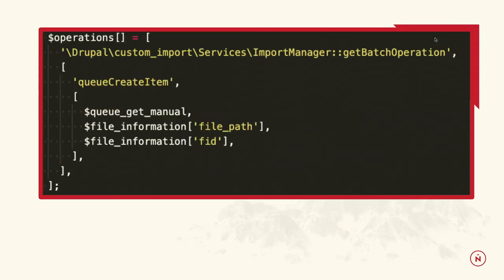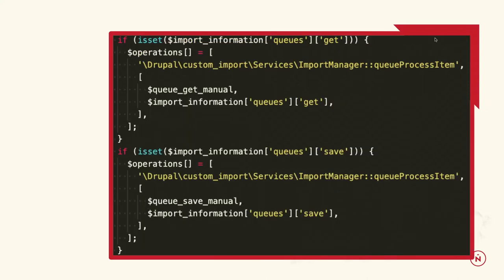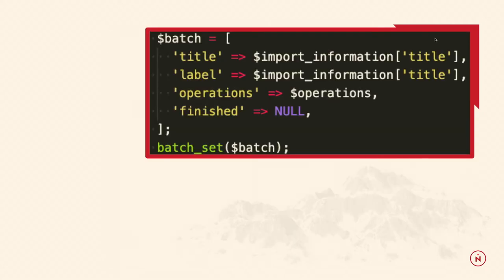Then we have our initial operation that creates that initial item — really just getting the file contents of that CSV and putting it in one queue item with any other details needed. The other operations are processing the get queue and the save queue — those are the two main queues. At the end we throw them all into a batch process and let it run.